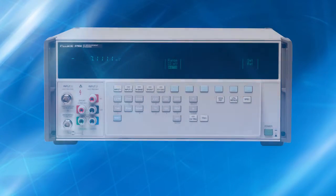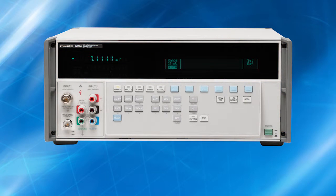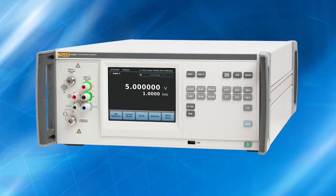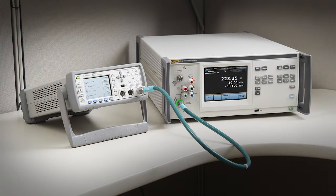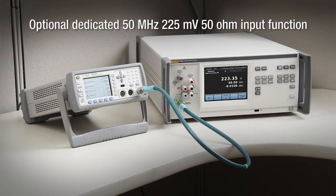The 5790B has a 5790A emulation mode so you can replace an existing 5790A by just swapping in the new unit. A dedicated special purpose 50MHz, 225mV, 50 Ohm input function is available as an option for measuring RF power.